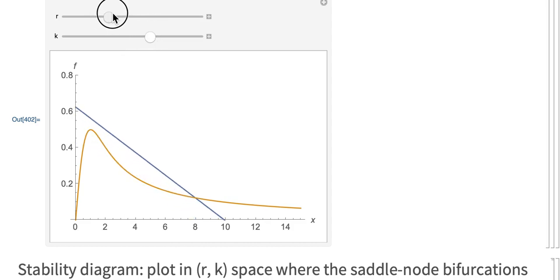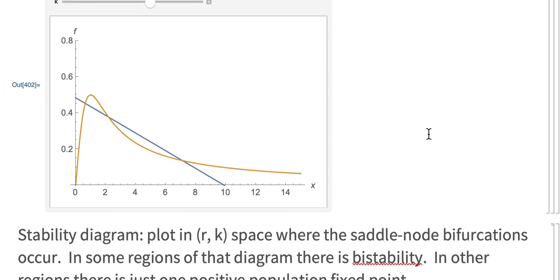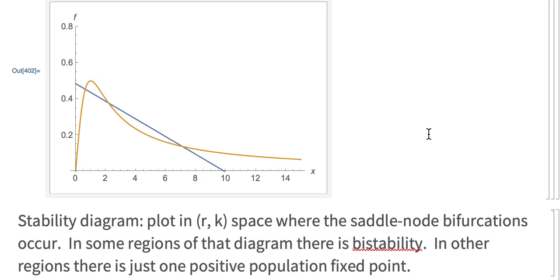So here I'm in the three, and here I'm in the one. So if I plot the curves in R K space where the bifurcations occur, I can label different zones in the space that might have one fixed point, or one stable fixed point, or two stable fixed points.